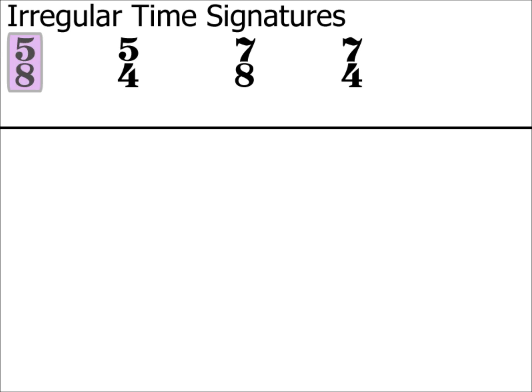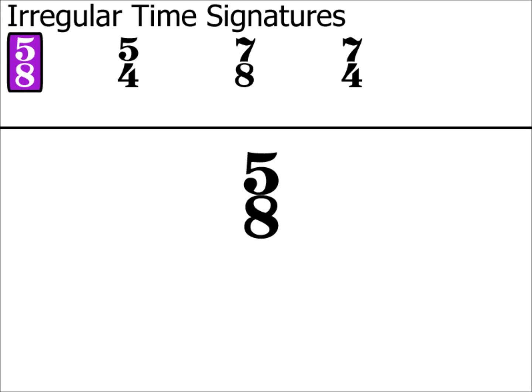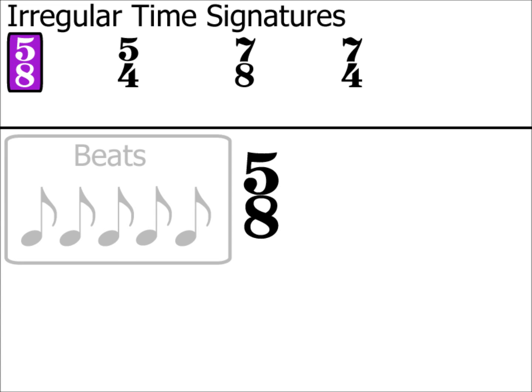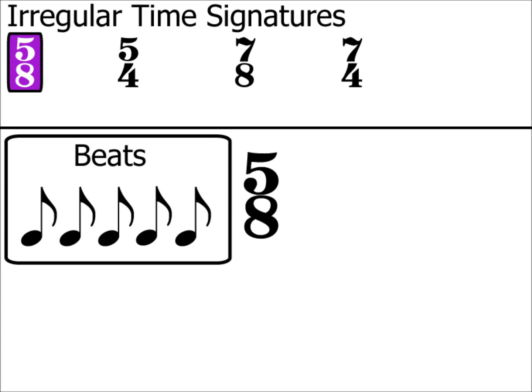Let's have a look at 5/8 to start with. As you're watching this video, which is part 4 of this series, you should now be able to look at this time signature and immediately identify that it means 5 quaver beats per bar.